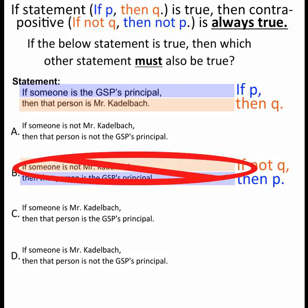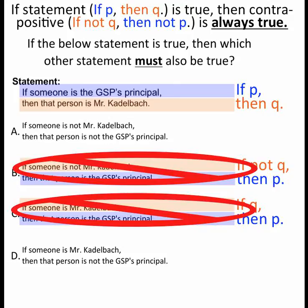That one's not always true — it's not the contrapositive. If someone is Mr. Kattelbach — if Q — then that person is GSP's principal — then P. Again, not the contrapositive.